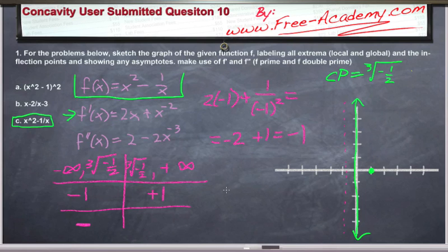Now we can solve the same problem using positive 1. This will be 2 times 1 plus 1 over 1 squared, and I think you can convince yourself that that's equal to positive 3 pretty easily. So now, not only do we know that we have a critical point at the third root of negative 1 half, we know we're going to be decreasing everywhere before that and we'll be increasing everywhere after that.